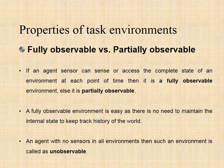If an agent's sensors give it access to the complete state of the environment at each point in time, then we say the task environment is fully observable. A task environment is effectively fully observable if the sensors detect all aspects that are relevant to the choice of action. Relevance depends on the performance measure.